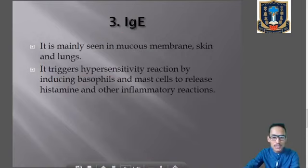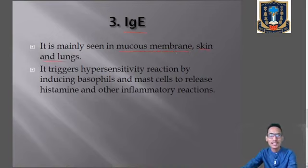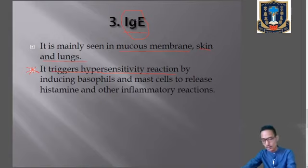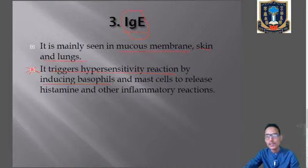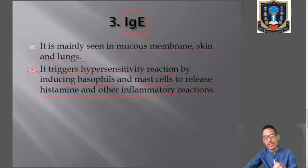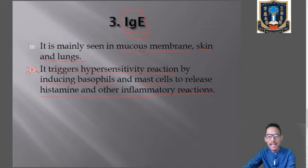Next is IgE, which is present in mucous membranes, skin, and the lungs. Importantly, IgE triggers hypersensitivity reactions. It induces basophils — a type of white blood cell — and mast cells to release histamine and other inflammatory mediators. So IgE is the antibody involved in hypersensitivity reactions.